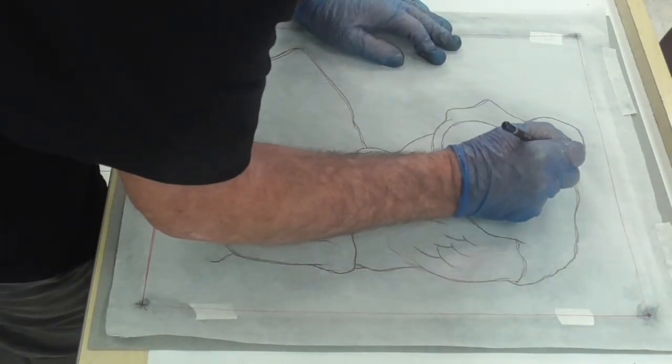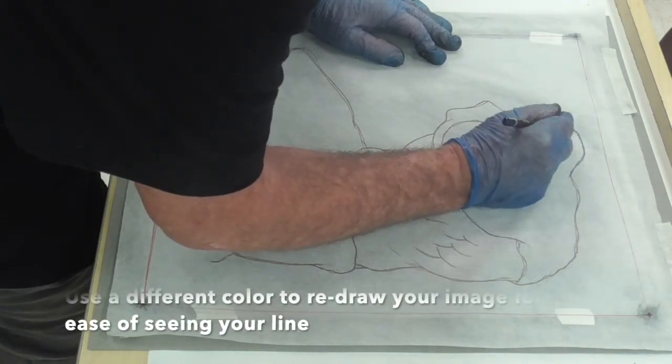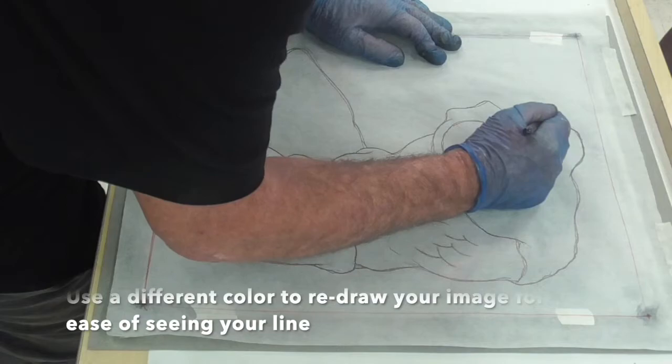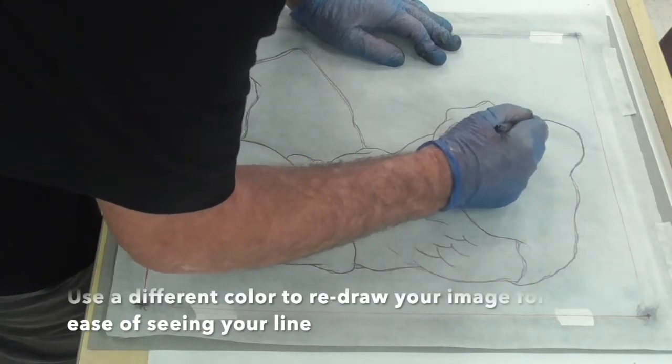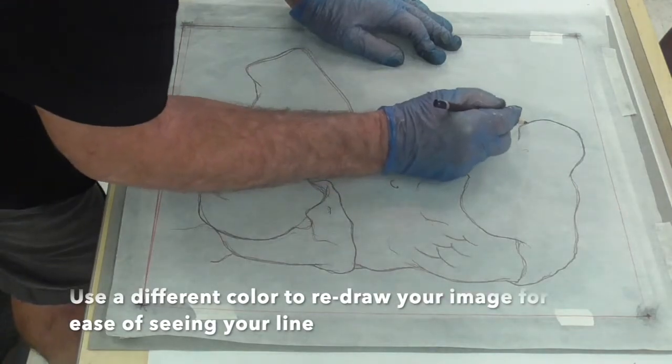So start at the top, start anywhere, and follow the contours the best that you can. I'm using a different colored pencil to do this. I would use a colored pencil or a graphite pencil and not a charcoal pencil for this. You want it to be smooth.